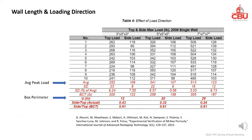This slide shows that the longer the wall length, the higher the box compression strength. Top load means loading in the strong direction; side load means loading in the weak direction. The 3-inch cube box has a wall length of 12 inches, the 5-inch box 20 inches, and the 7-inch box 28 inches. The side load capacity is weaker than the top load capacity, and longer wall length or box footprint perimeter gives more load-carrying capacity. The key McKee formula includes box perimeter as a factor.